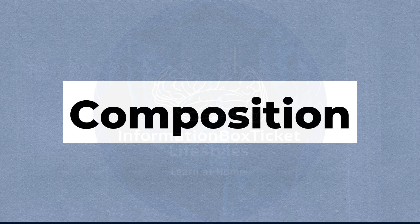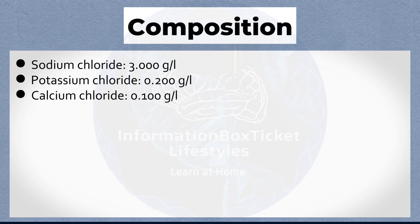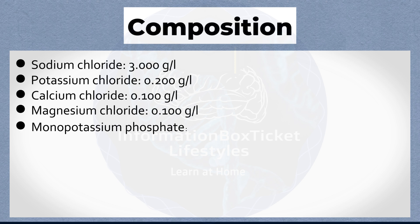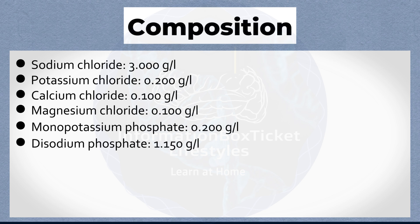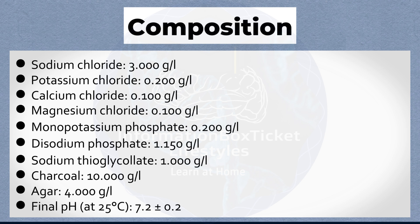Composition of Amey's Transport Medium: Sodium chloride 3.000 g/L, Potassium chloride 0.200 g/L, Calcium chloride 0.10 g/L, Magnesium chloride 0.10 g/L, Monopotassium phosphate 0.20 g/L, Disodium phosphate 1.150 g/L, Sodium thioglycolate 1.000 g/L, Charcoal 10.000 g/L, Agar 4.000 g/L. Final pH at 25°C: 7.2 ± 0.2.